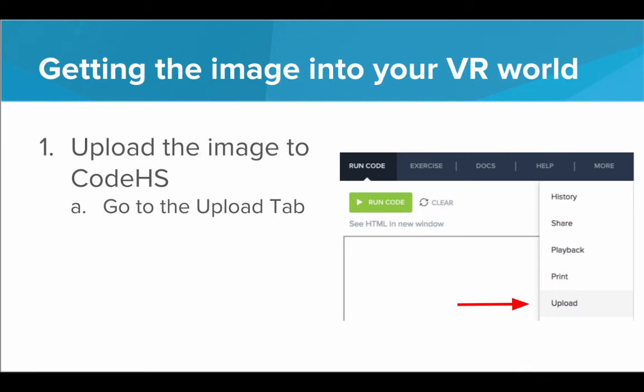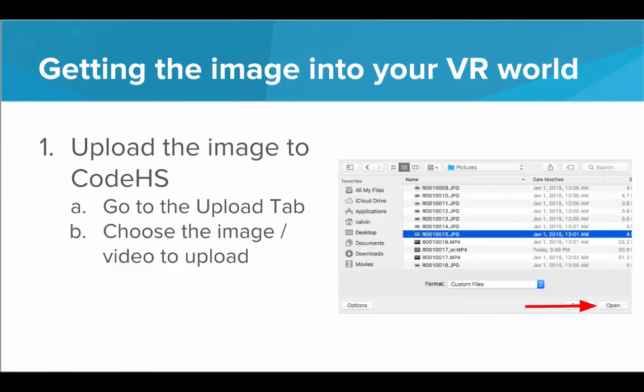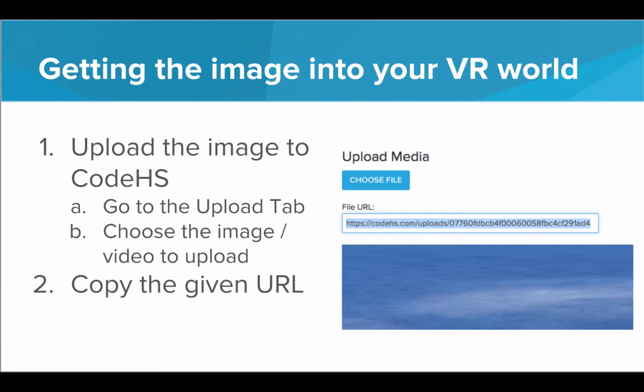To upload, go over to the upload tab — click More and then go down to Upload. Once you're in the upload tab, click Choose File and select the image or video you want to upload. Find it on your computer, click Open, and it will upload the file. Wait a bit and it will upload the image to CodeHS and give you a URL for that image. Copy that URL — that is the URL we'll be using in our program.